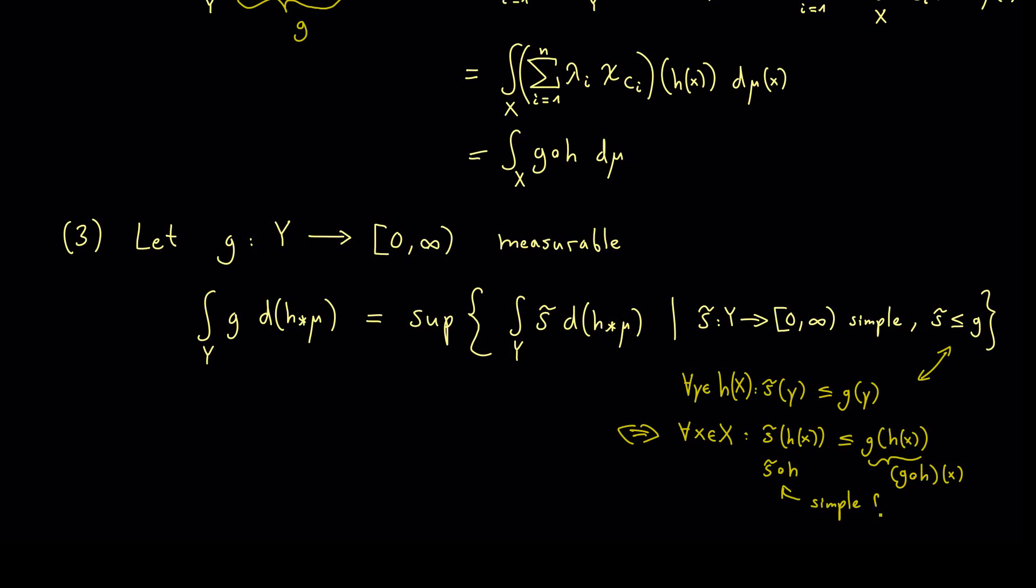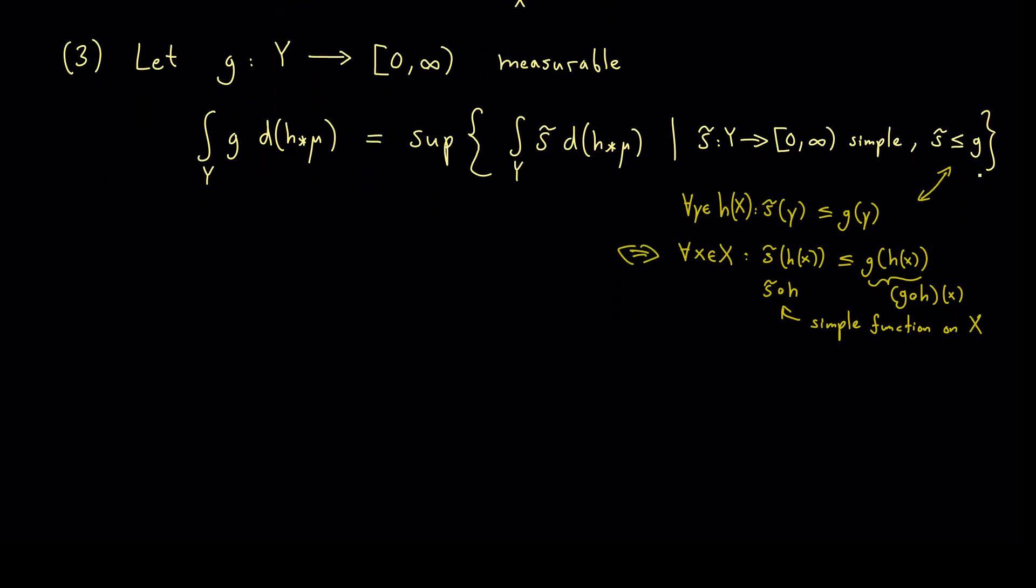And now please recall the beginning of this video. We have shown that this is again a simple function but now on the set X. And with this we have indeed gained something. We still have the supremum here but inside we know that the substitution rule holds for simple functions. Which means we have now the integration over X and here s tilde composition with h d mu. And behind we can now write s tilde composition with h less or equal to g composition with h.